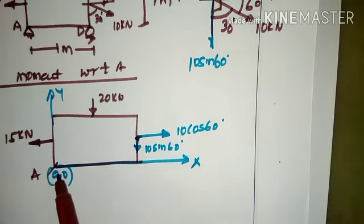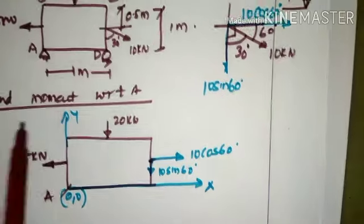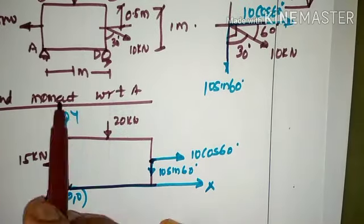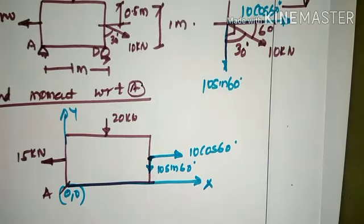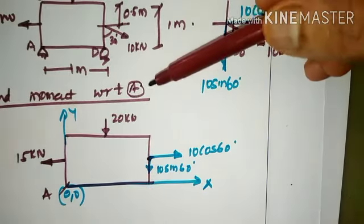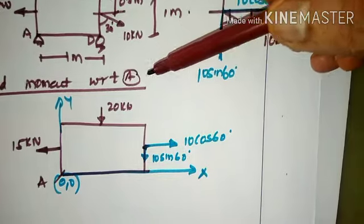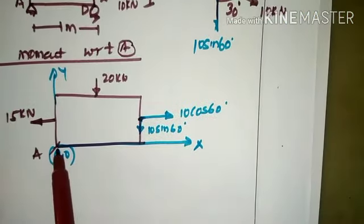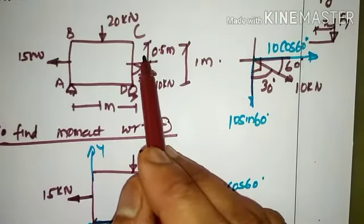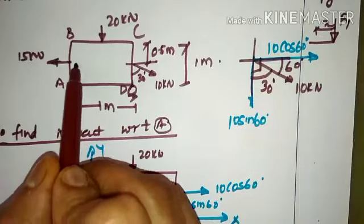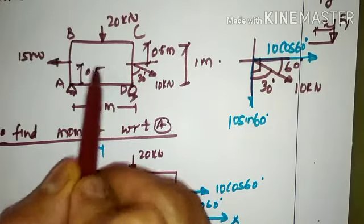Considering point A as the origin, the 15 kN force is placed at a distance of 0.5 m from both the top and bottom fiber, since the total height is 1 meter. The coordinate at the 15 kN force location is x = 0, y = 0.5.